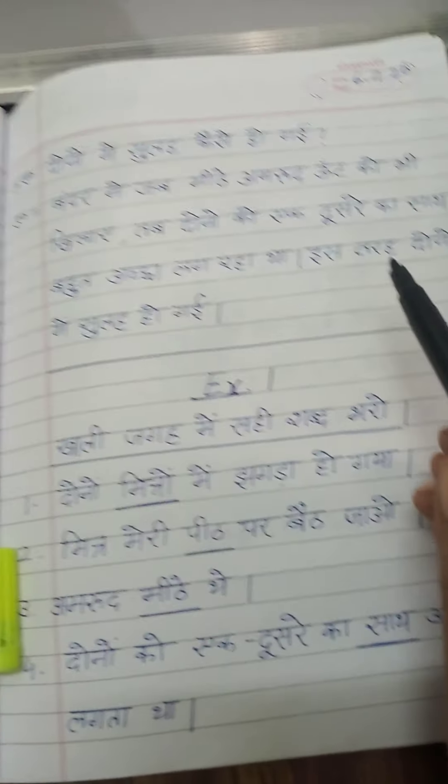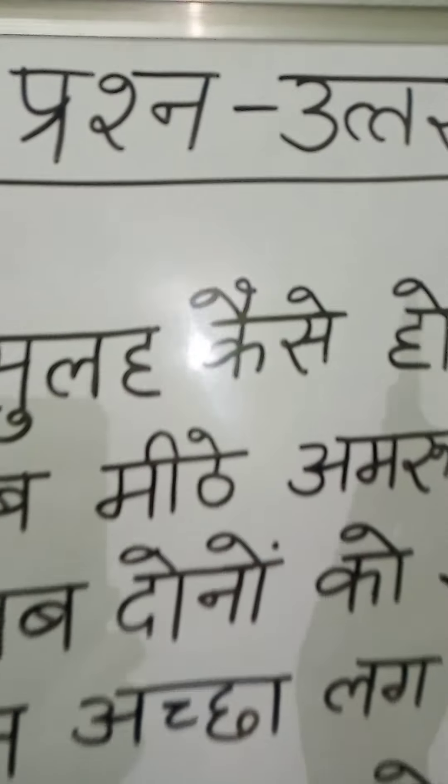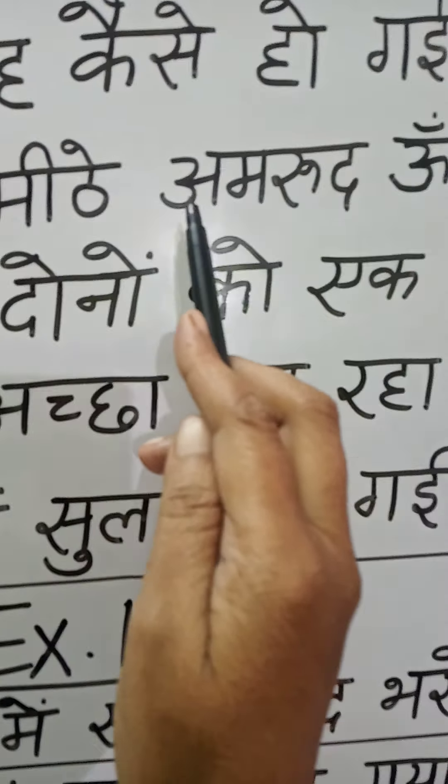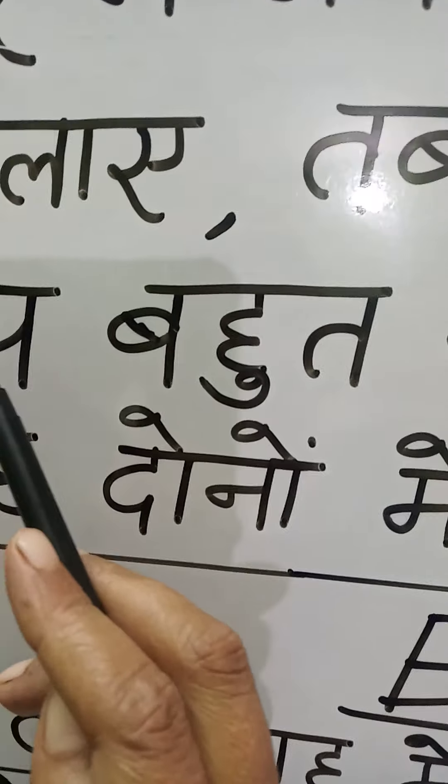Children, see here — the question is: how did the difference between both of them end? The answer is: बंदर ने जब मीठे अमरूद उठ को भी खिलाए, तब दोनों को एक दूसरे का साथ बहुत अच्छा लग रहा था। इस तरह दोनों में सुलह हो गई। ठीक है बच्चों।